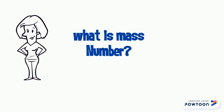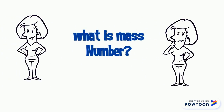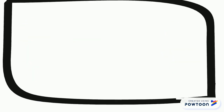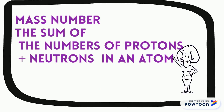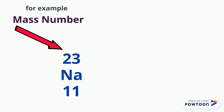Now that we know what is meant by atomic number, we will move on to learn what is meant by mass number. The mass number is the sum of the numbers of protons and neutrons in an atom. Mass number is the number of protons and neutrons inside the nucleus — both numbers together, as shown here.